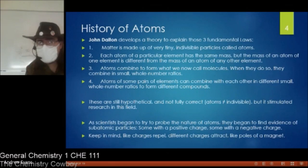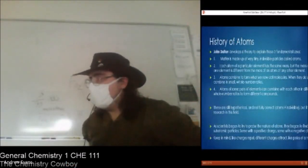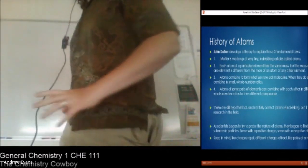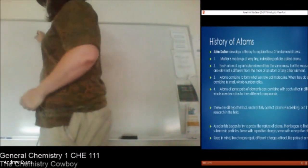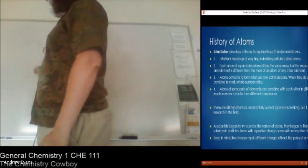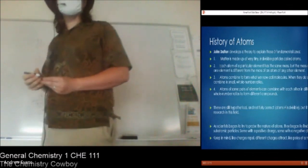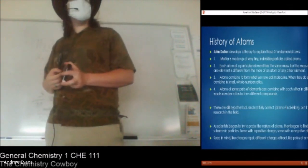Atoms will combine together in what we form molecules, and when they do, they combine in small whole number ratios. And then atoms of some pair of elements can combine with each other in different small whole number ratios to form different compounds. As I said before, water and hydrogen peroxide, H2O, we drink, we live, H2O2, disinfectant, oxidizer. You drink that, you're going to die.